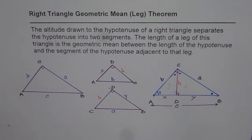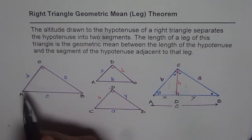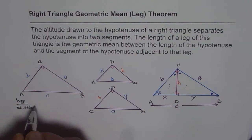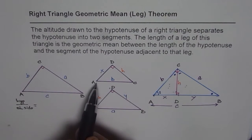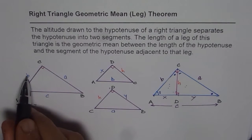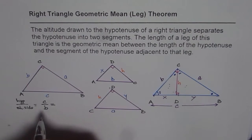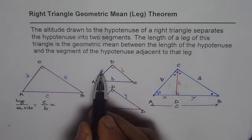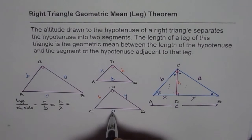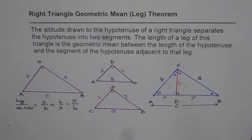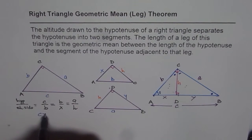Now if you compare the sides — hypotenuse over the shorter side — for all these triangles this is the hypotenuse and the shorter side is b. From the first big triangle we get c over b; from the second triangle we get b over x; and from the third triangle we get a over h. Looking at the first two ratios, c over b equals b over x. Cross-multiplying gives cx equals b squared, or b equals the square root of cx.